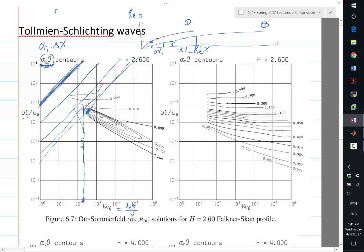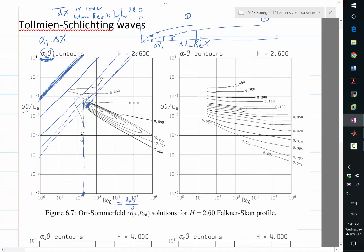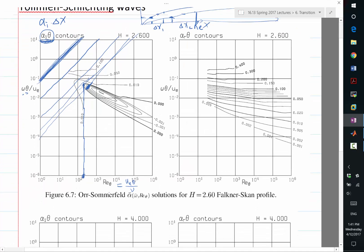So basically, D theta DX is lower when Rex is higher. For lower Reynolds number flow, we may need to wait until a lower frequency to be sufficiently amplified to achieve transition.